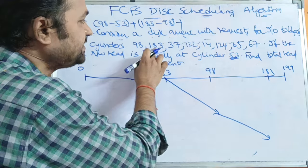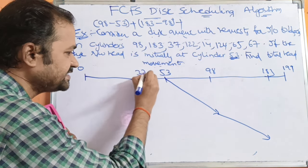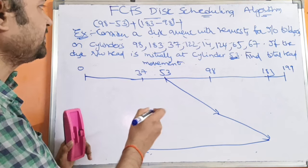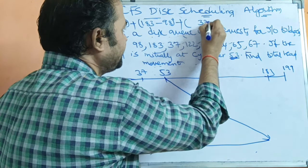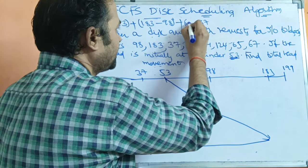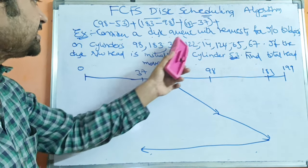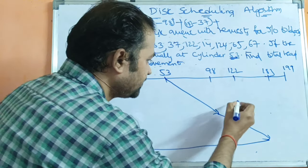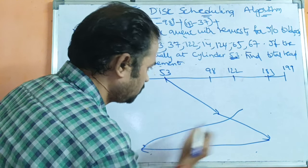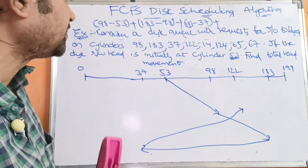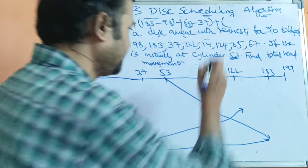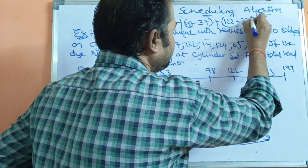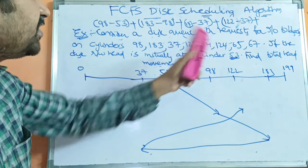After 183, we have to access cylinder 37. From 183 to 37, we subtract 37 from 183: that is 183 minus 37. Next, after 37 we have to move to cylinder 122. We subtract 37 from 122: that is 122 minus 37.